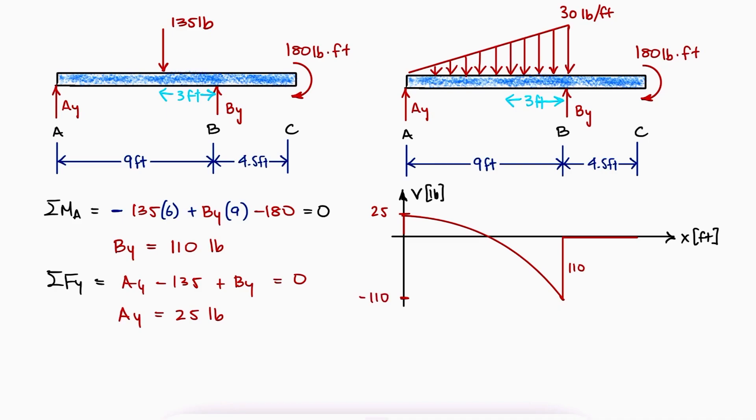For the bending moment diagram with an X-axis in feet and a Y-axis in pound feet, the starting value will be 0 because there are no external couples at A, and the slope will begin at 25, become 0...